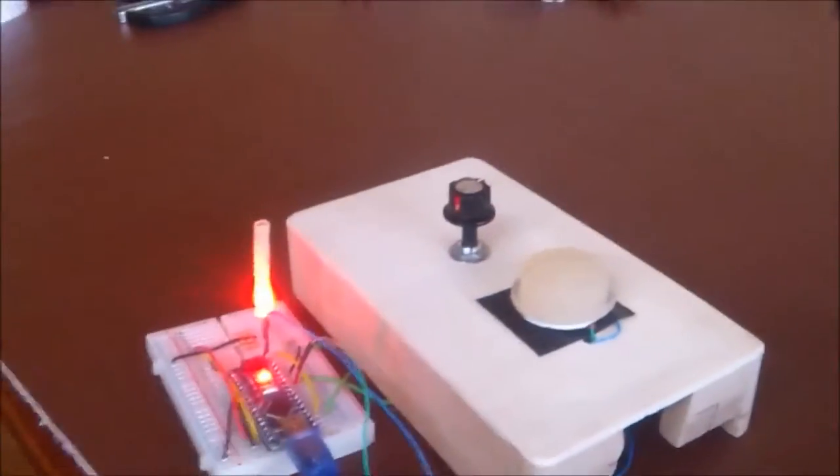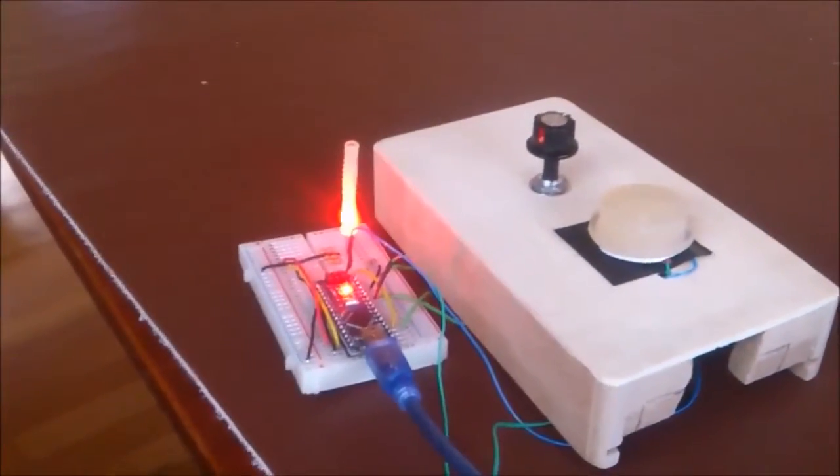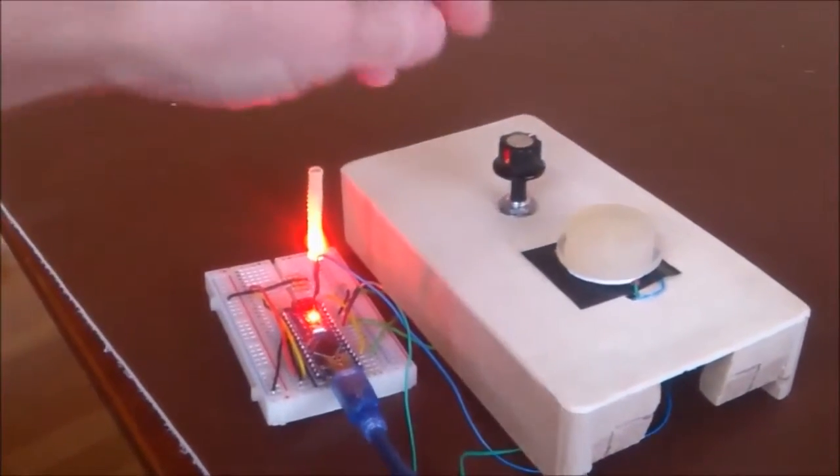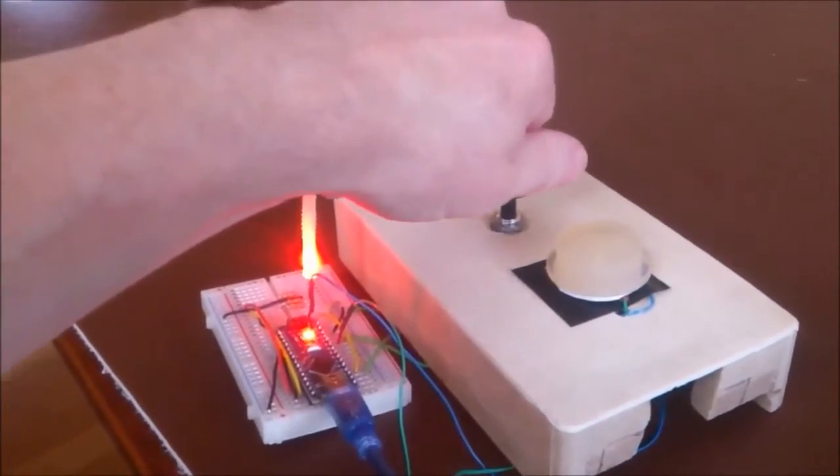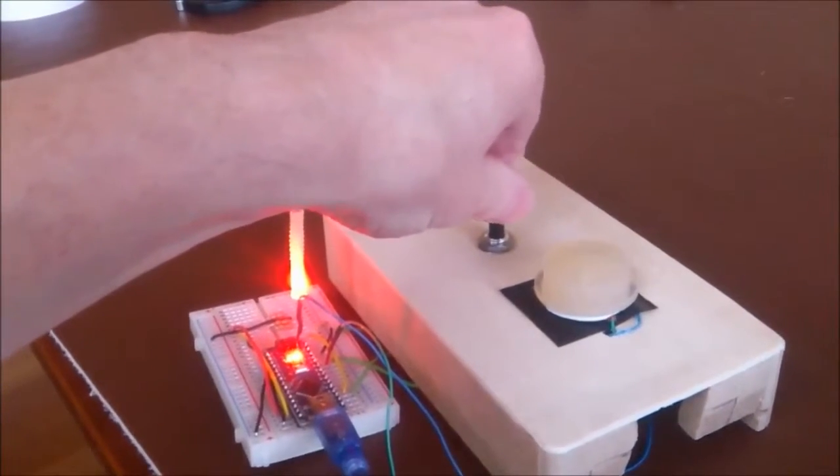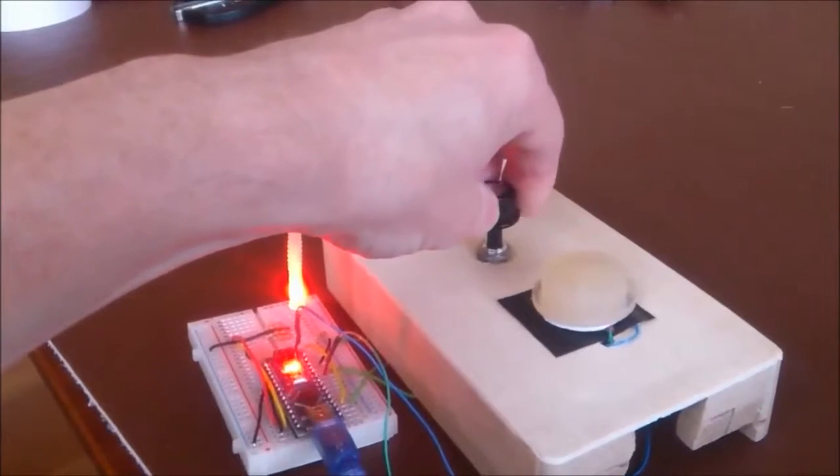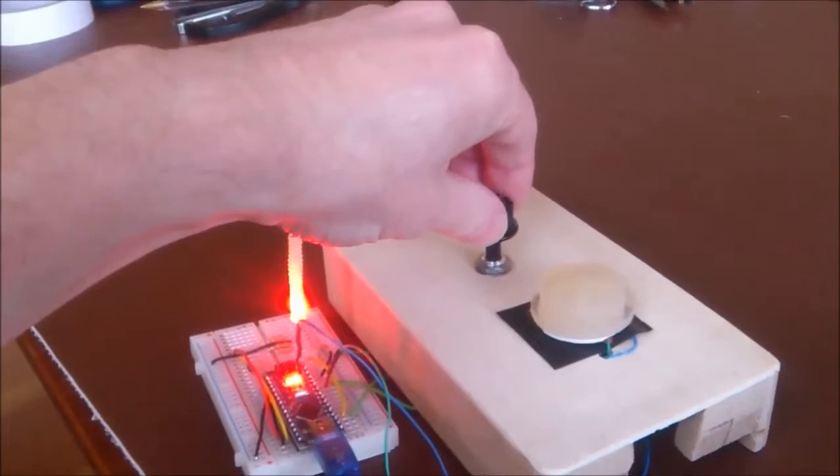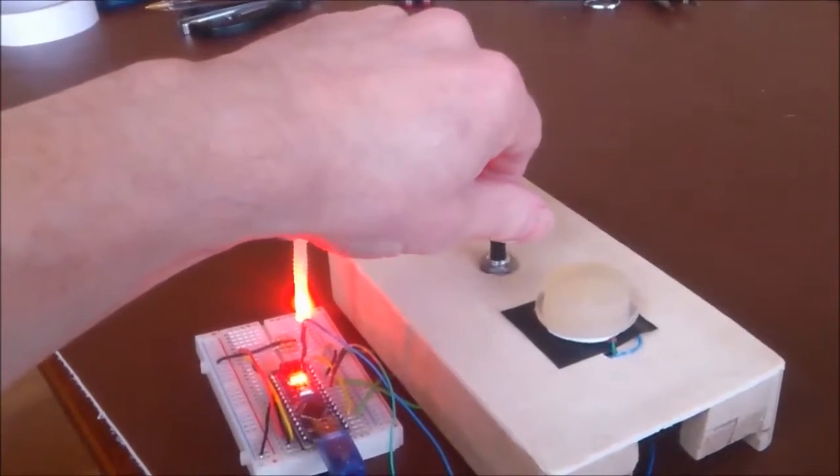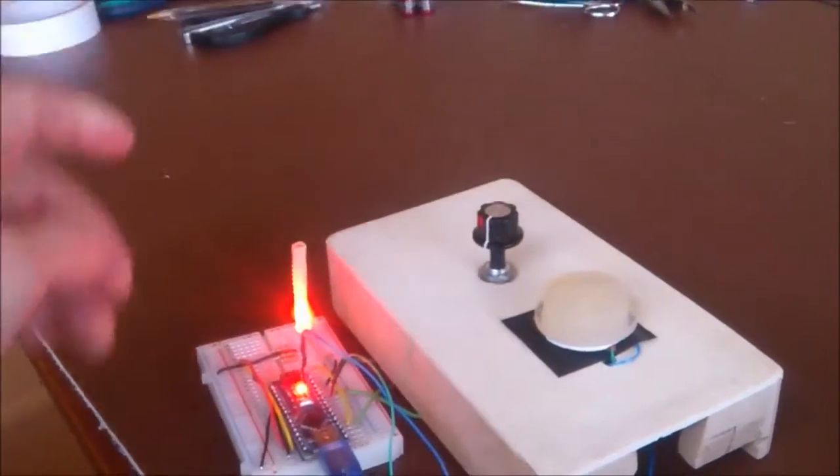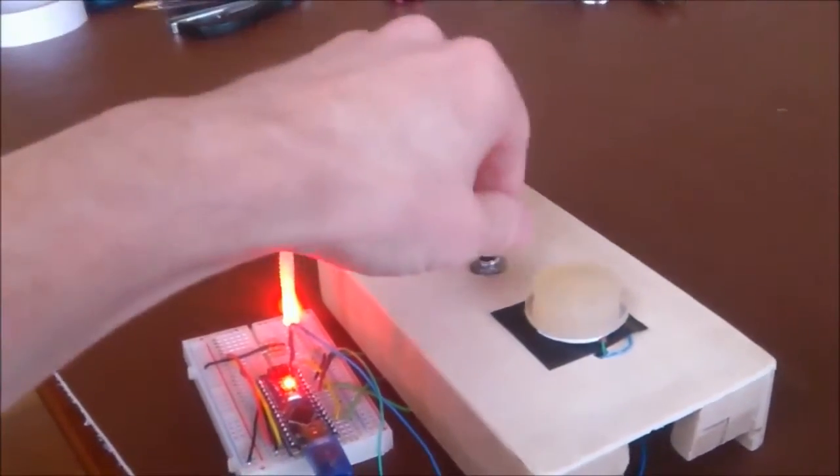Okay, so the red pot controls the position in the buffer from which grains are drawn, so it scrubs through the file quite simply. So you can play forwards, backwards, and freeze.